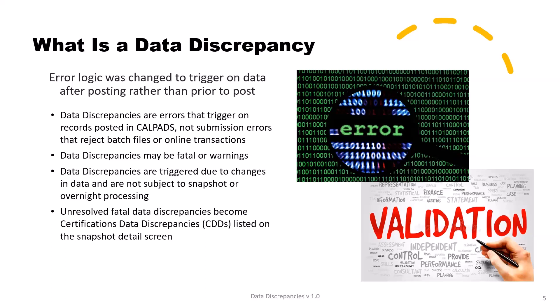As described in CalPADS flash message number 223 back in June of 2022, CalPADS error logic was changed to trigger on data after post or posting, rather than prior to post. These are now called data discrepancies. Data discrepancies are errors that trigger on records posted in CalPADS. These are not submission errors that reject batch files or online transactions. Data discrepancies may be fatal or warnings, and are triggered due to changes in data and are not subject to snapshot or overnight processing. Unresolved data discrepancies will become certification data discrepancies, or CDDs, which are listed on the snapshot detail screen.